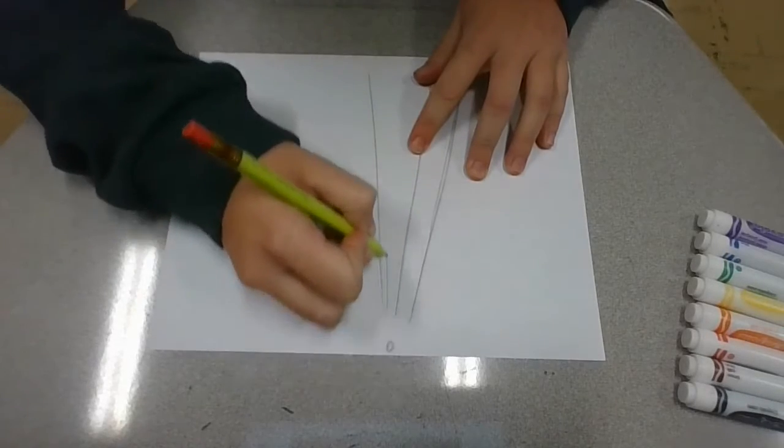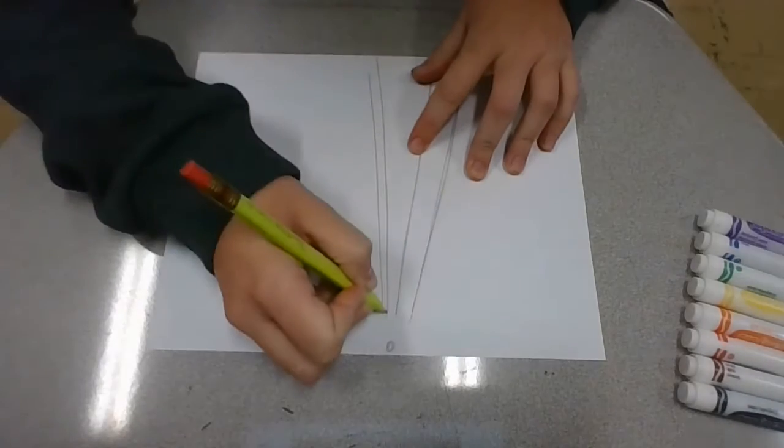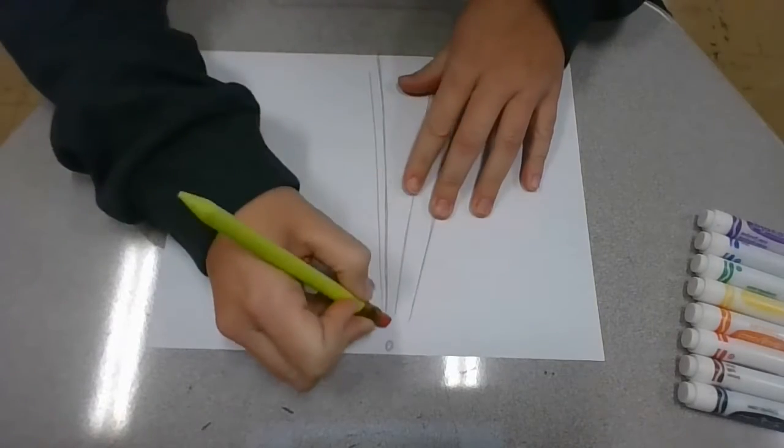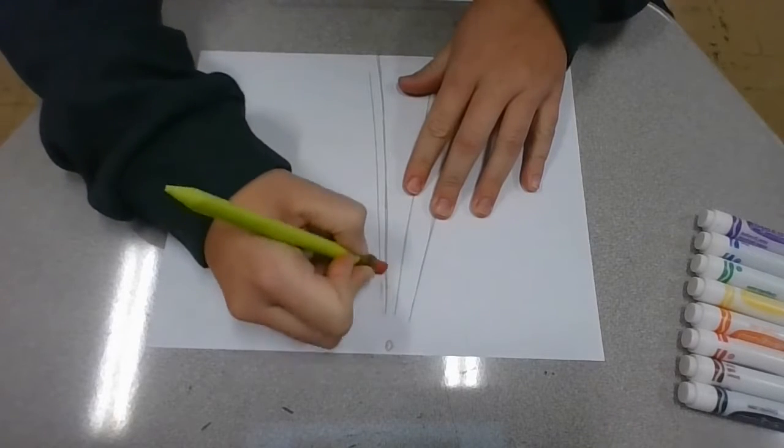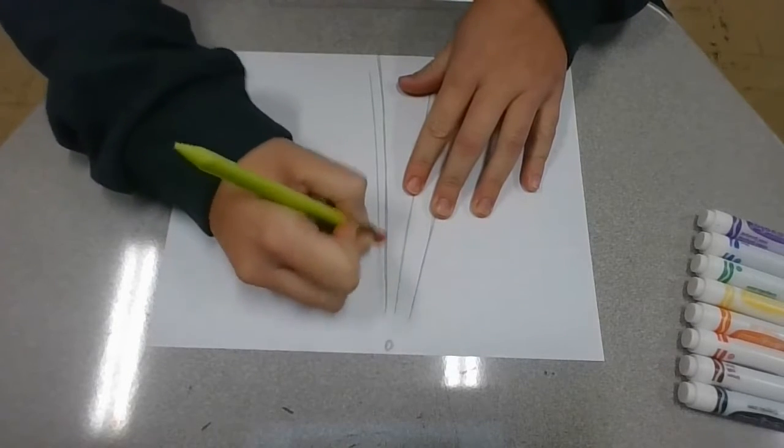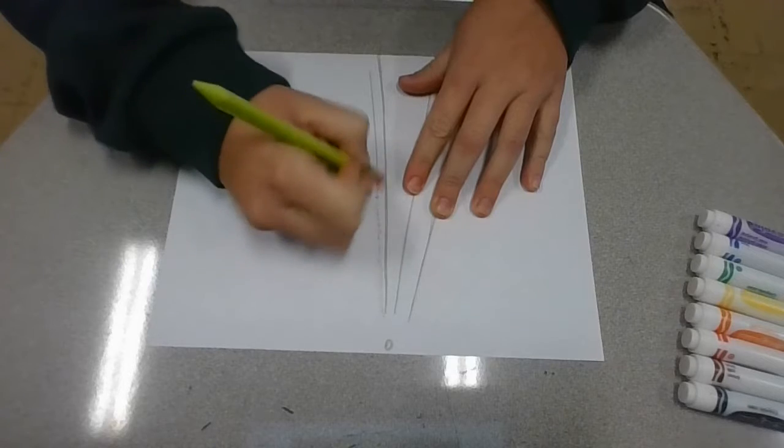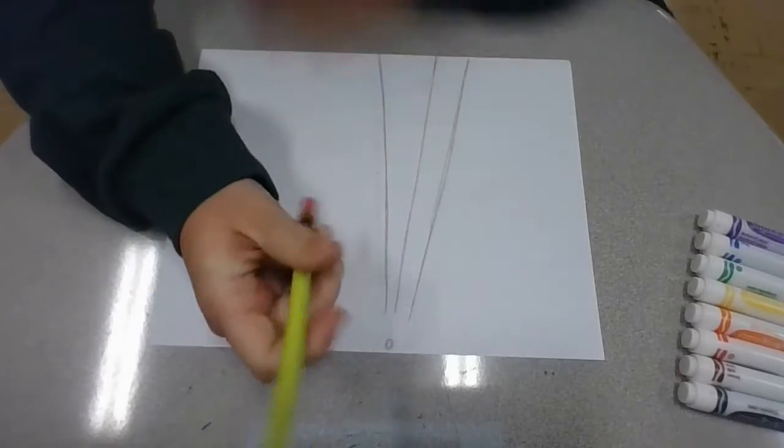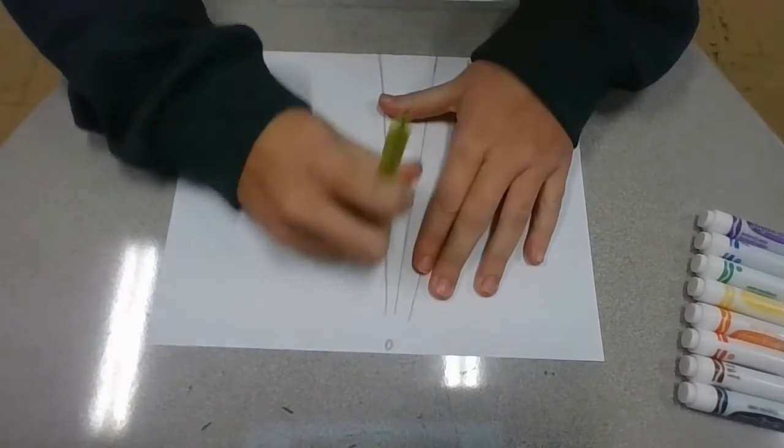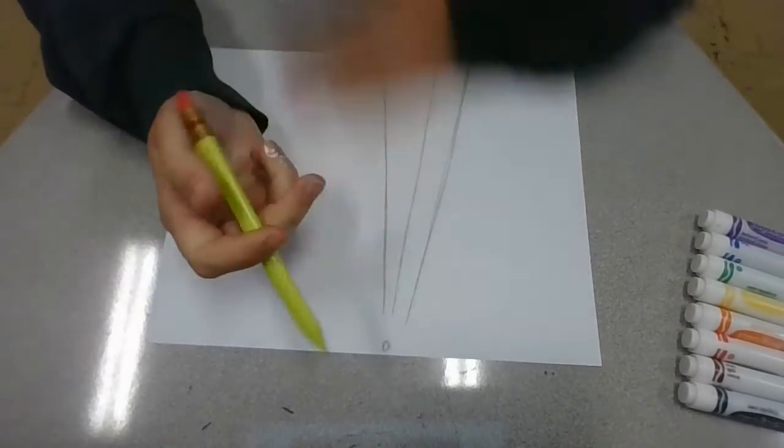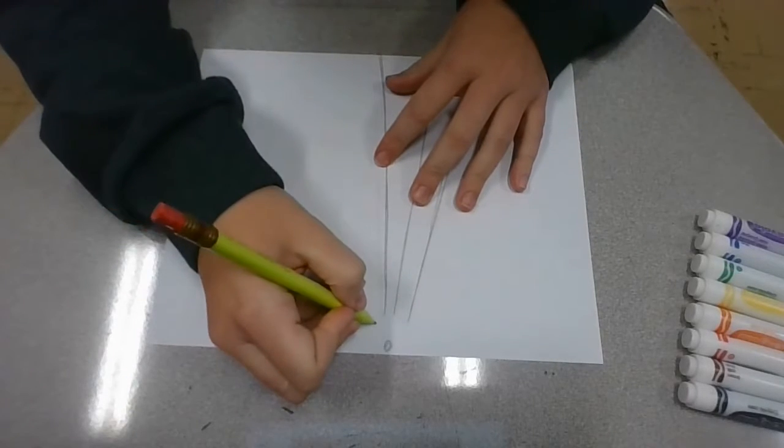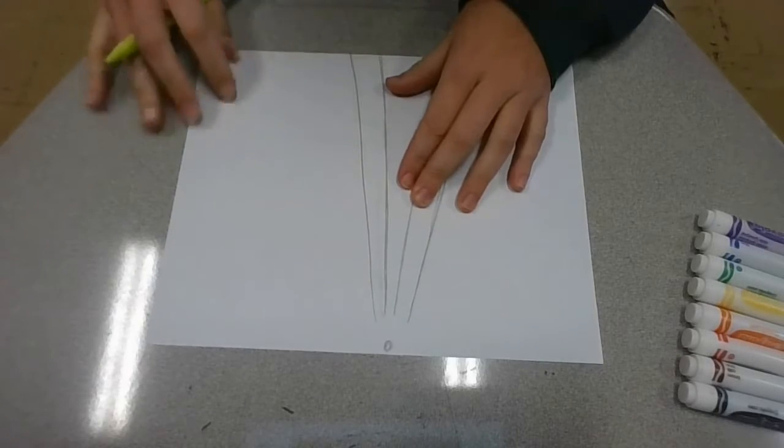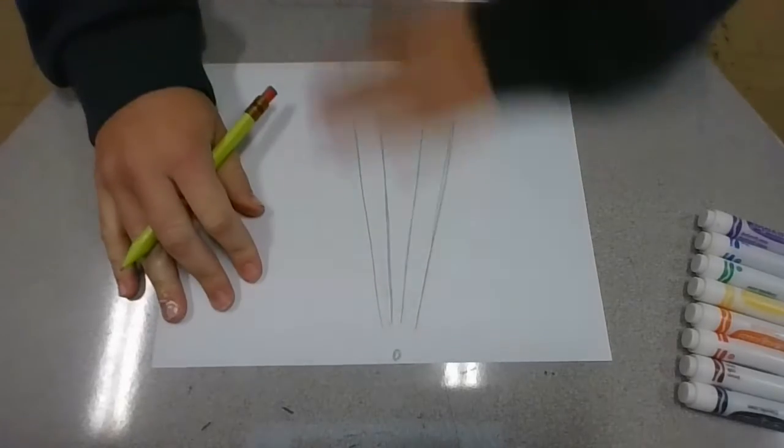And that one's a little too wide. Now you want to be drawing lighter than I am just because you want to be able to erase. I'm just trying to draw dark enough that you can see what I'm doing. And then our last line is going to go right next to the other line. So we've got our four lines.